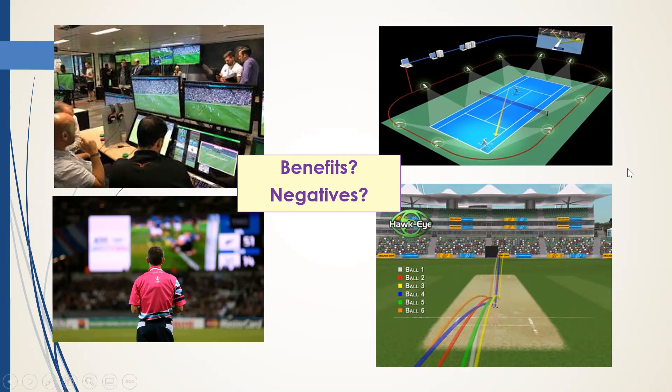You've also got things like Hawkeye, which you can see on the bottom right and top right. It's used specifically in sports like tennis and cricket with cameras all around the court or the pitch, and it essentially tracks the ball to eliminate errors from officials — it tells you whether the ball is in or out, and in cricket whether the ball was going to hit the stumps. There are a lot of videos coming up that I'm going to leave you to look through. If you're not sure about any of these sporting examples, you can watch the videos to clarify. Note down the benefits and the potential negatives of each.